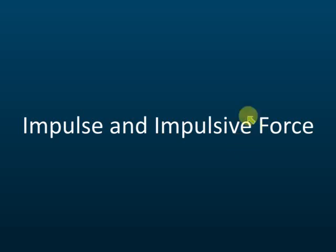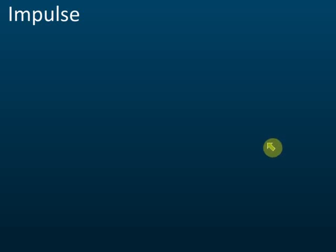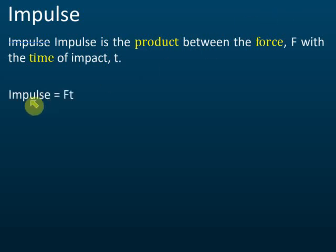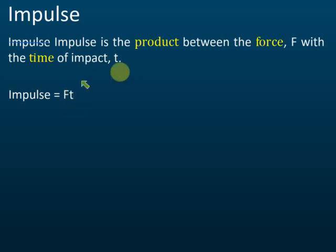Let's proceed to impulse. By definition, impulse is the product between the force F and the time of impact T. This means impulse is equal to the force multiplied by the time the force is applied on an object, and that is called impulse.